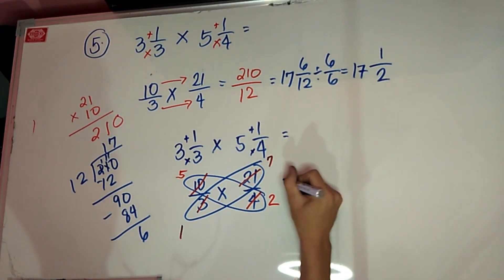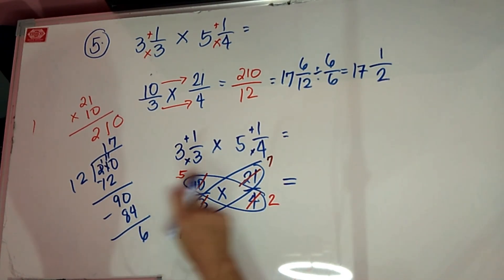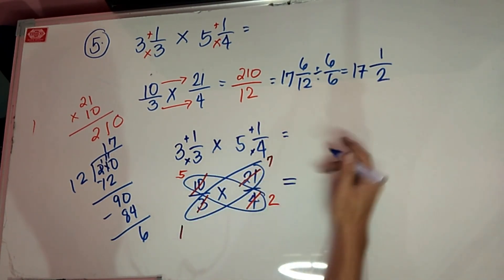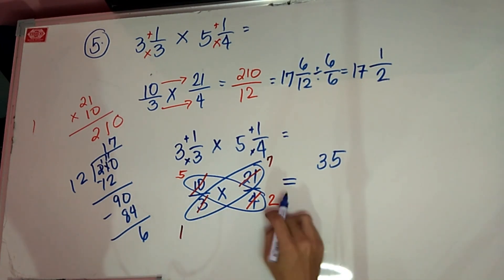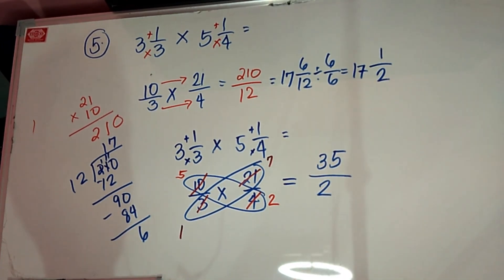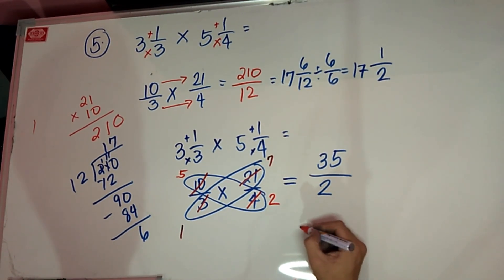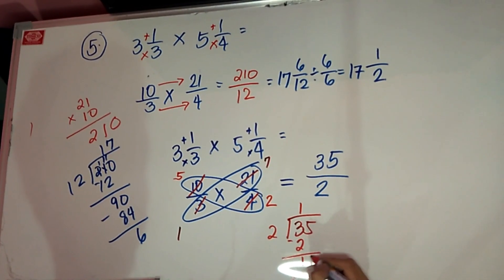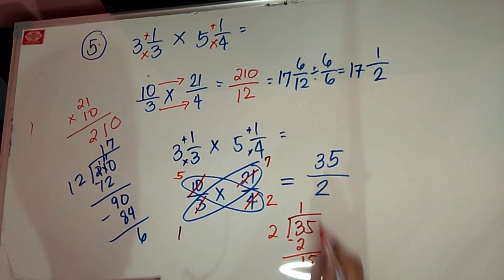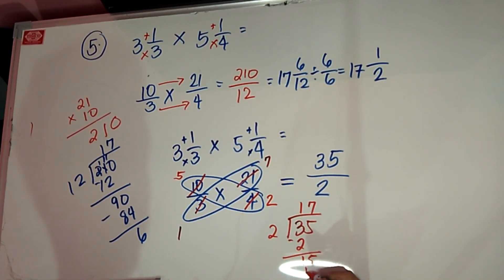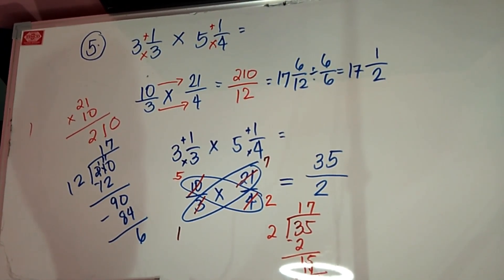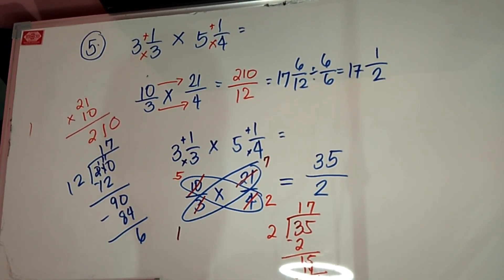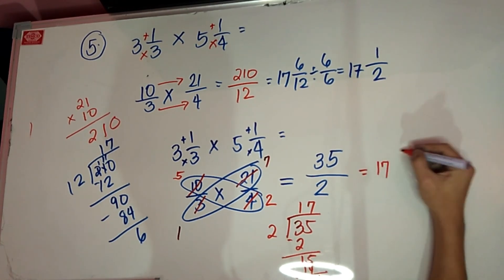After cancellation, multiply what remains: 5 times 7 is 35, and 1 times 2 is 2. So we get 35 over 2 — this is an improper fraction. Change to mixed fraction: 35 divided by 2 is 17 remainder 1. So the answer is 17 and 1 half.